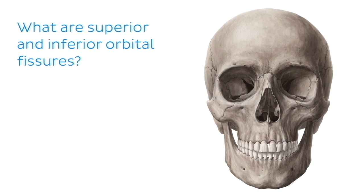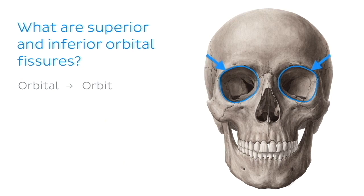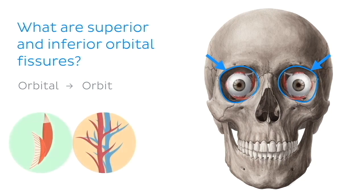Let's start with the words they have in common. Firstly, the word orbital tells us where in the body we should be looking for these structures. The orbit. The orbits are sockets within the skull in which the eyeballs are accommodated, in addition to their associated musculature, vessels and nerves.